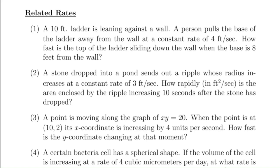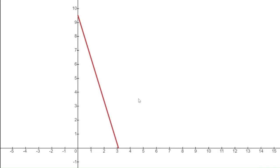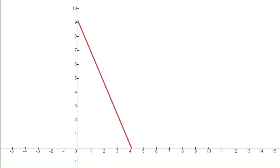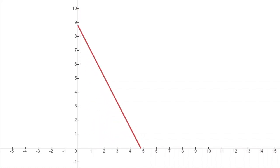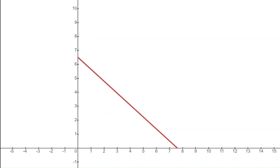Let's look at some examples. A 10-foot ladder is leaning against a wall. A person pulls the base of the ladder away from the wall at a constant rate of 4 feet per second. How fast is the top of the ladder sliding down the wall when the base is 8 feet from the wall? I've made a diagram of the situation in Desmos. The ladder is in red, the x-axis represents the floor, and the y-axis is the wall the ladder leans against.